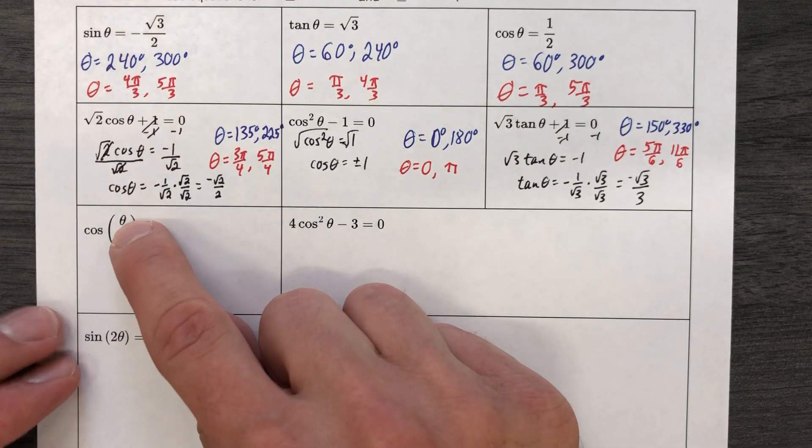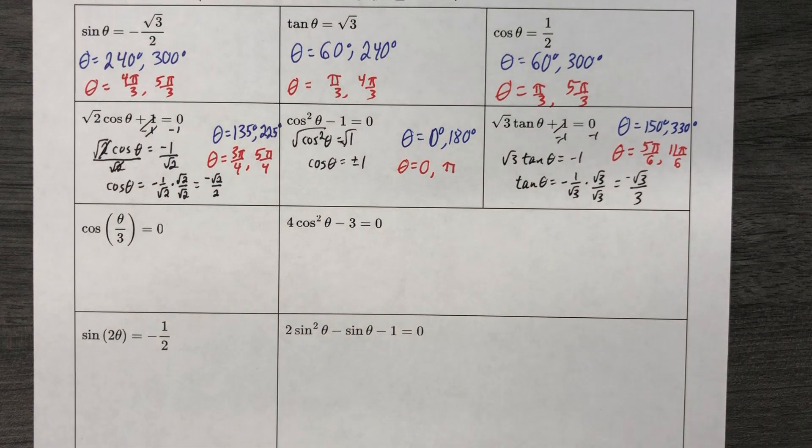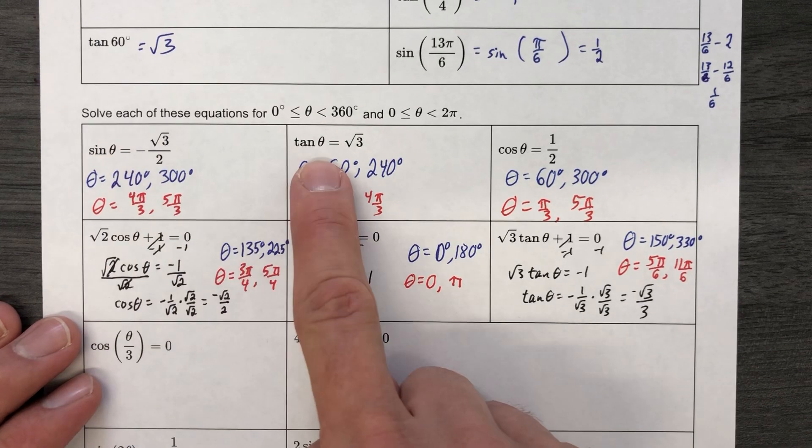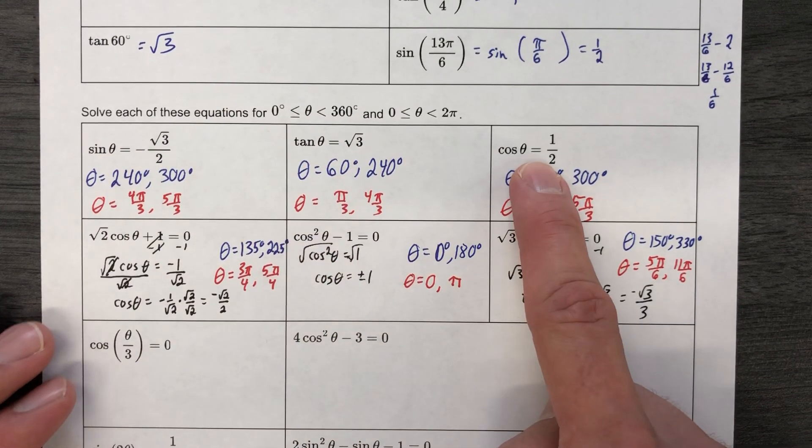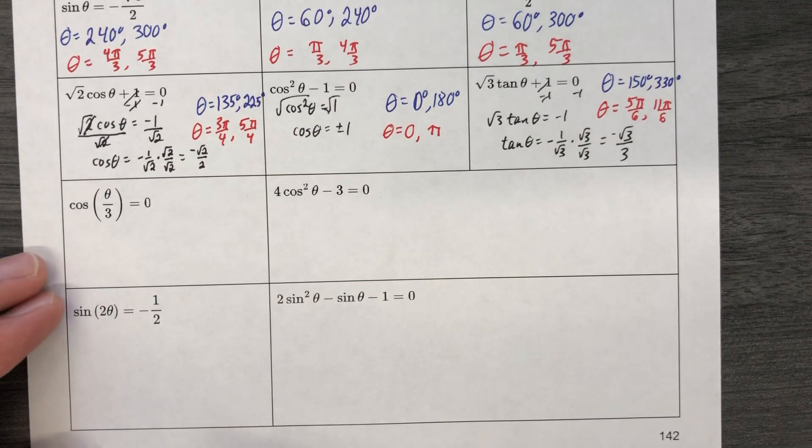For what values of theta is the cosine of theta over 3 equal to 0? Up until this point, we have either had a problem where the sine, cosine, or tangent was isolated, or where we had to isolate it, and actually we're in the same situation here.